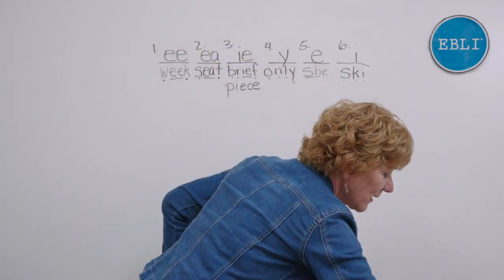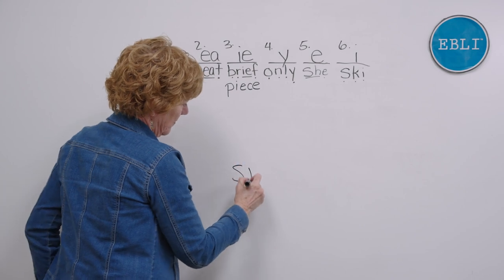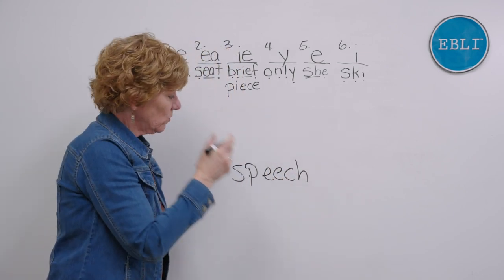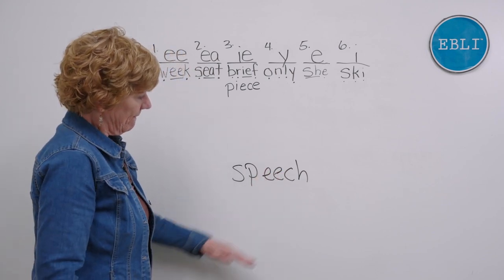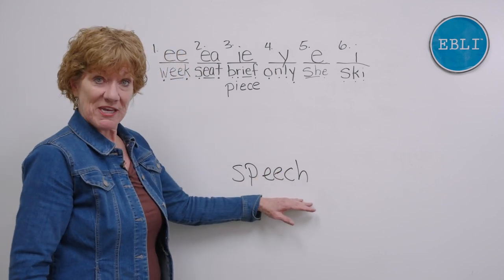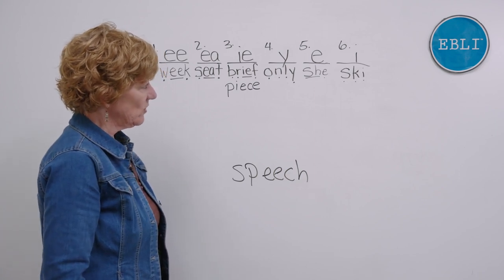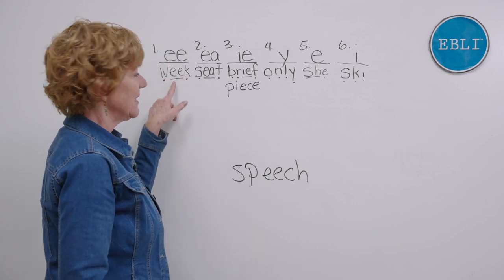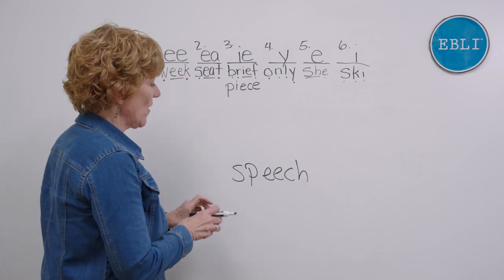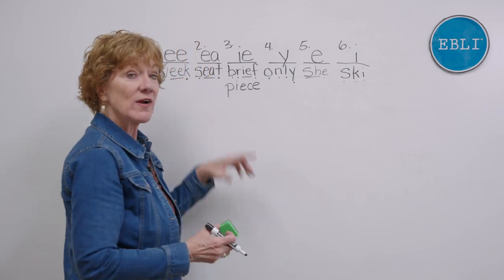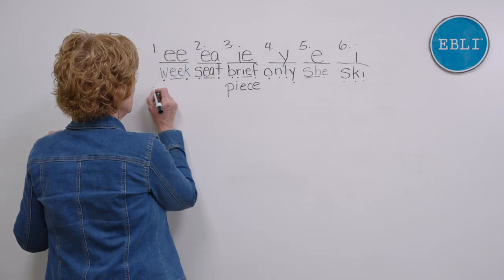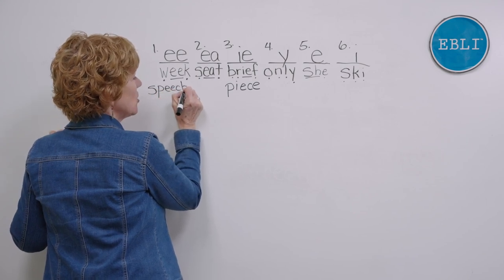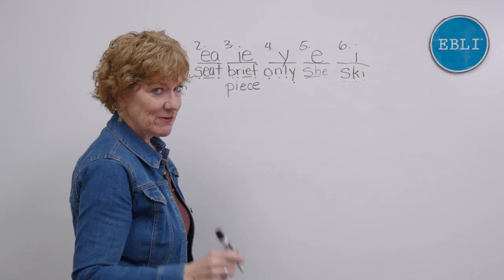Now we'll go a little bit quicker. What is this word? This is the word 'speech.' Which E spelling do you think it matches? This is the same as in the word 'weak,' so it goes in column one. Say the sounds as you write the word 'speech' in column one. Speech. Did you say every one of those sounds? I want you to be just as crisp as I am - saying those sounds as you write.